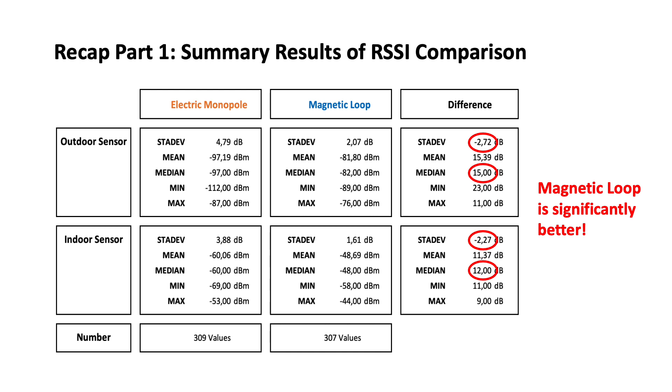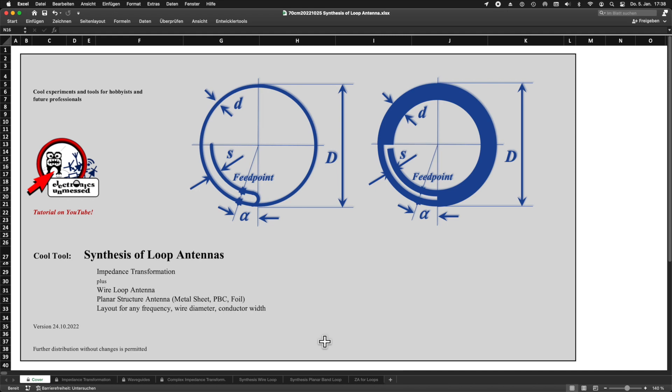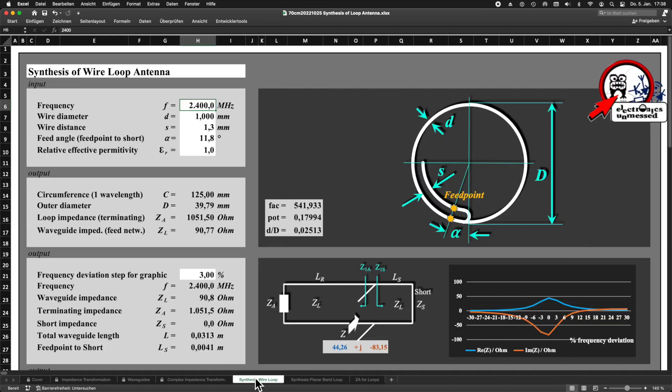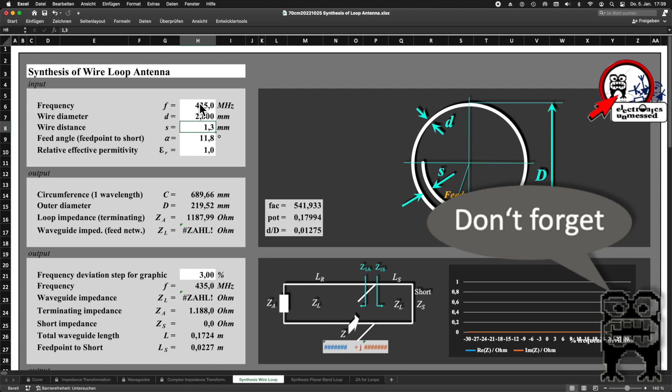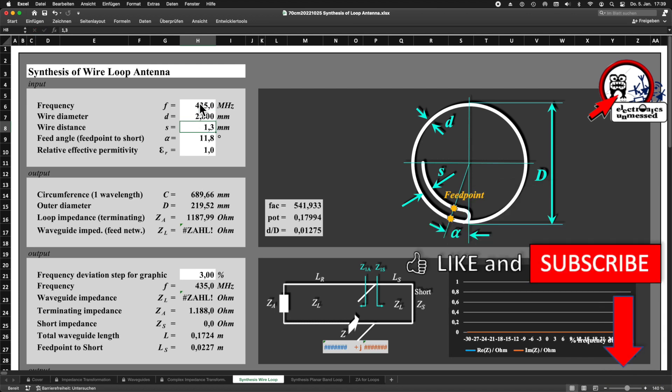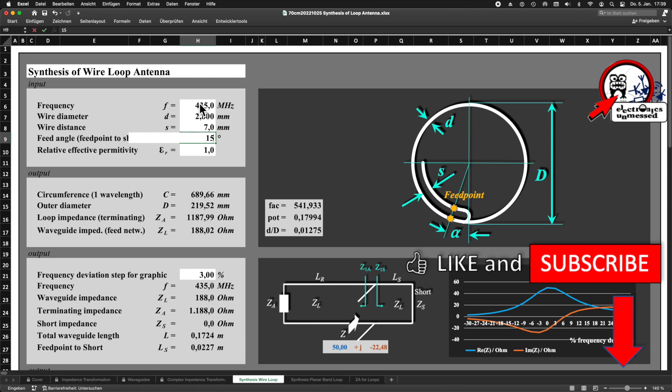By the way, if you want to build the antenna for other frequency bands, then I recommend my Excel tool. This allows you to dimension the antenna for any other frequency band. It might be worth subscribing to the channel and checking out the previous videos on the subject.